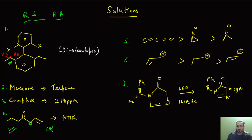There was one more question on asymmetric synthesis. A starting material was given, then LDA was added, followed by benzyl bromide. Basically, the benzyl bromide will be attached below the plane at this position.